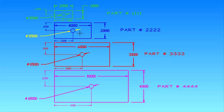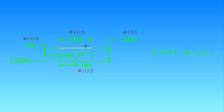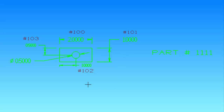The first step in creating a parametric program is to look at the dimensions that are going to be changing from part to part. The length is going to change on every part, so we assign it variable number #100. The width changes from part to part, so we assign it variable number #101. The hole location in one direction gets variable #102, and the second direction of that hole location gets variable #103. These variable numbers will be identical for those features on every part.